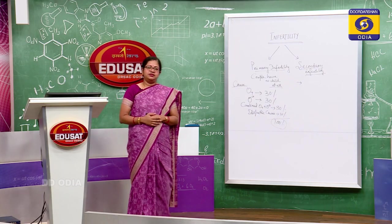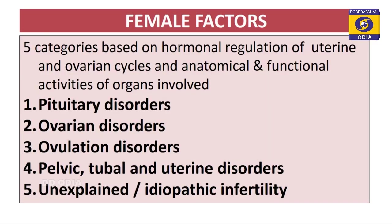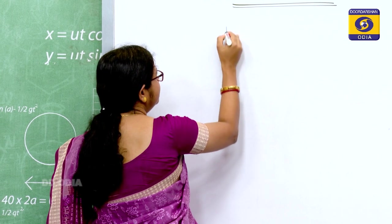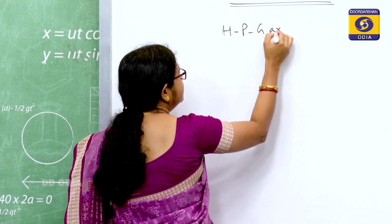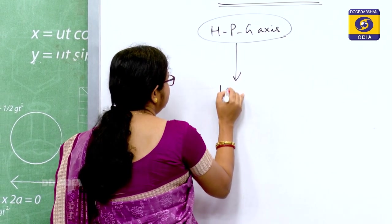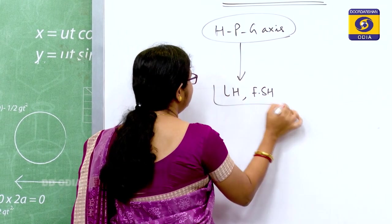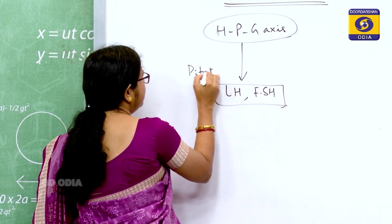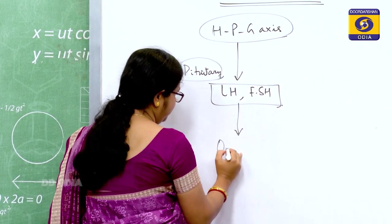Now let us come to the female factors. In the female reproductive system, whatever organs are present for reproduction are all involved under these factors. We can categorize female factors under five broad categories, based on the hormonal regulation of ovarian and uterine cycles and the anatomical and functional activities of the organs involved. We have the hypothalamo-pituitary-gonadal axis, which stimulates the secretion of LH and FSH from the pituitary via the hypothalamus, directly affecting the ovaries.